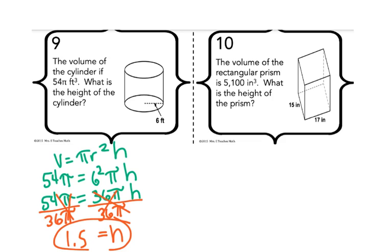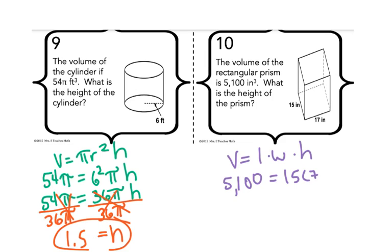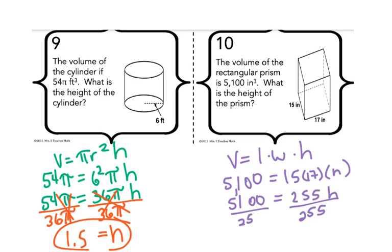In our next example, the volume of a rectangular prism is 5,100 inches cubed. What is the height of the prism? Remember that volume equals length times width times height. We are given our volume, which is 5,100, equals length times width times height. So we're going to do 15 times 17 times our height. We multiply 15 and 17 together to get 255, so 5,100 equals 255h. We divide both sides by 255, and h will equal 20.